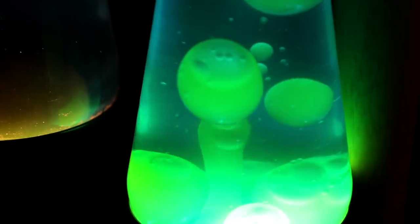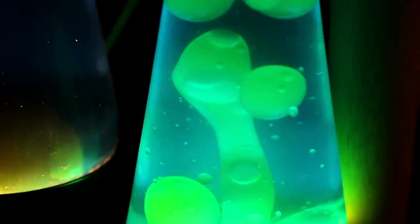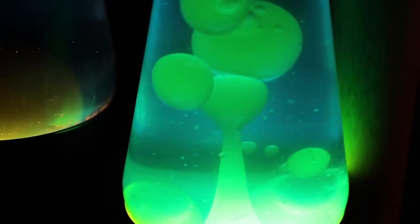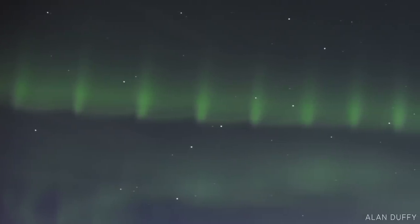Just like a lava lamp, the buoyancy between the bubbles and heavier plasma creates fingers of plasma about 2,500 miles wide that stretch down towards Earth, creating the distinct pearl necklace structure in auroral beads.